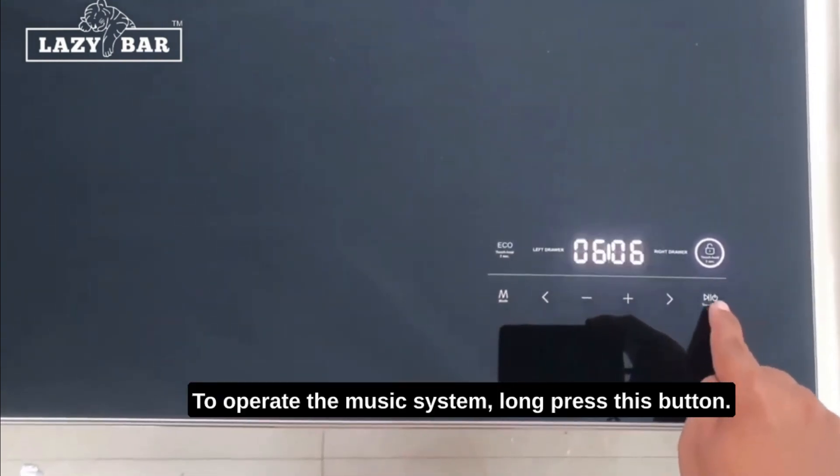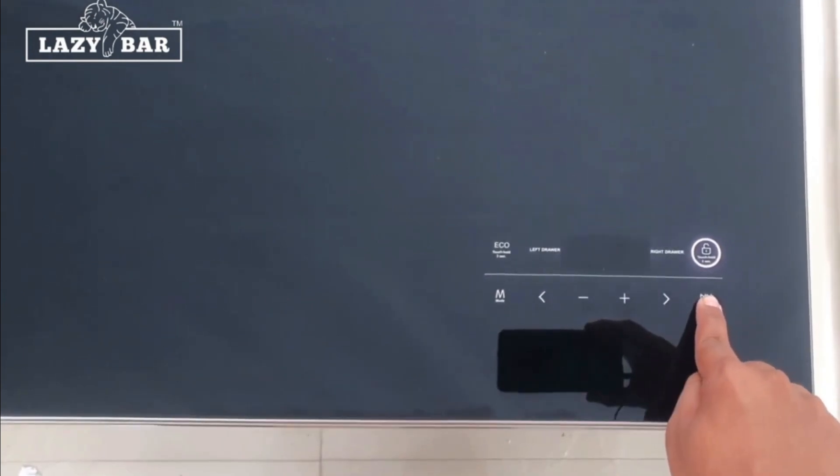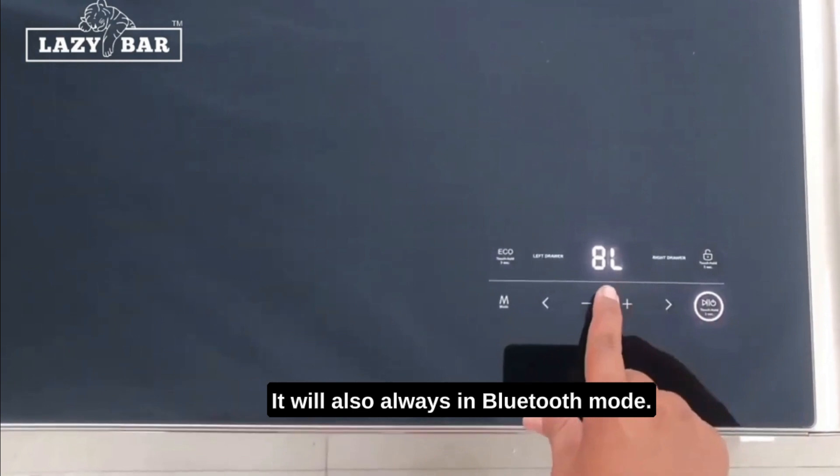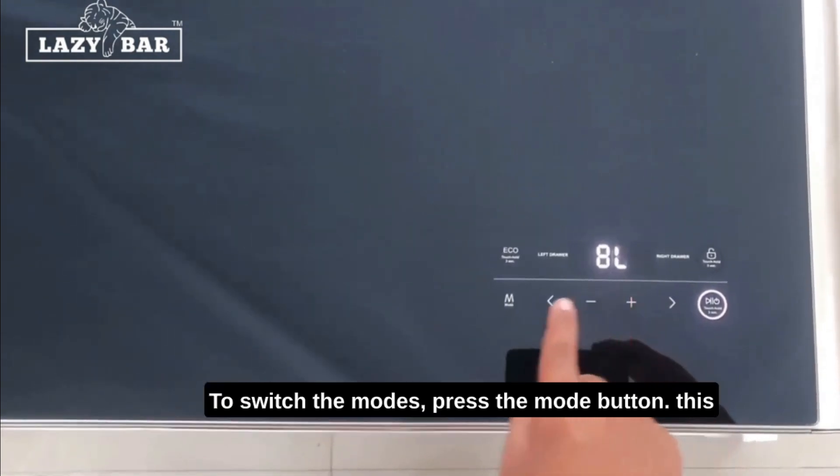To operate the music system, long press this button. It will always be in Bluetooth mode. To switch the modes, press the Mode button.